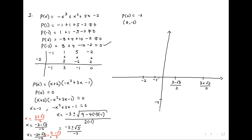Student asks: on the 3, doesn't it have a negative in front? What happened is this was over negative 2, so negative 3 plus root 5 over negative 2 — the negatives cancel to give positive 3 plus root 5 over 2.